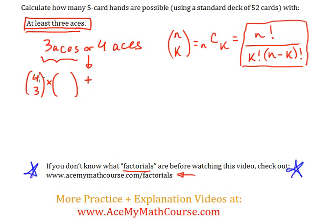So from the 48 cards that are not aces, we're selecting two of them. So we can't forget to plug that into the equation or to take that into consideration.